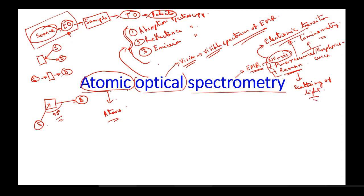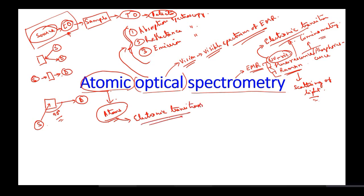When we talk about atomic optical spectroscopy, we are getting information about the atoms. How does the atom give information? Here also we have electronic transitions which will provide us some information about the atom.